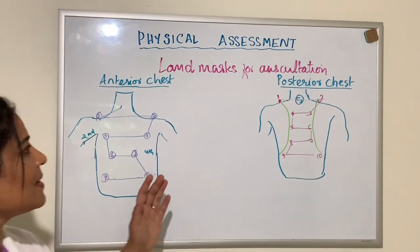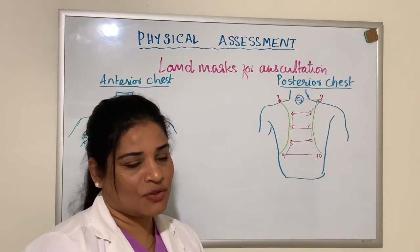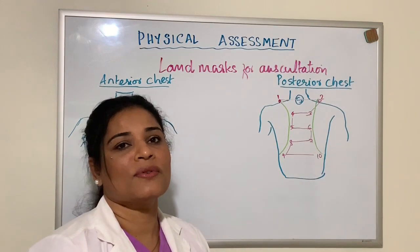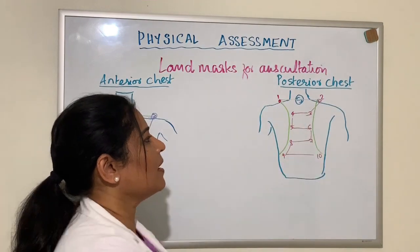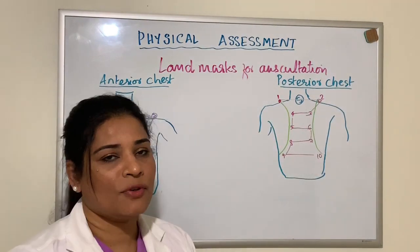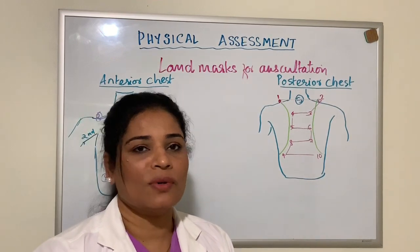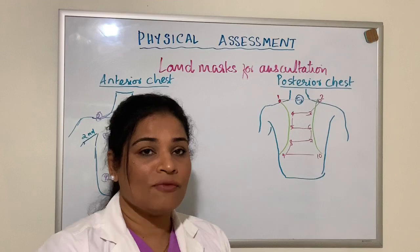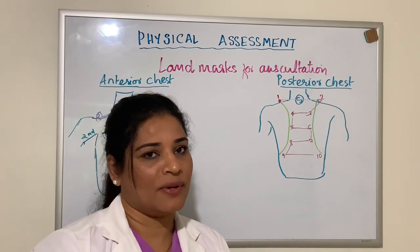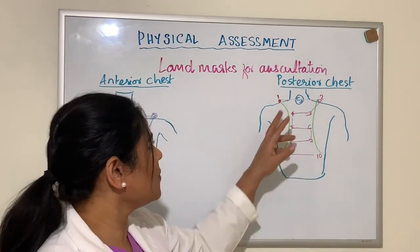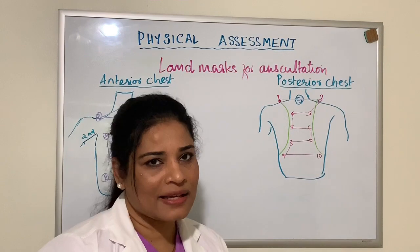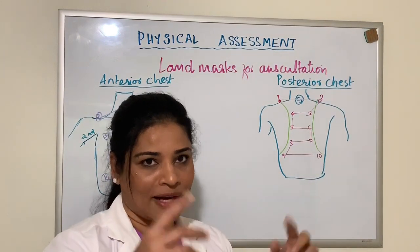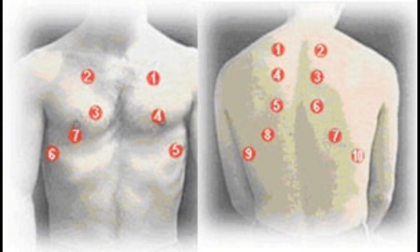In the same way, we assess the posterior chest using specific landmarks. There are bony structures — the scapula and vertebral column — so if you place your stethoscope over the bone you won't hear anything. You have to keep your stethoscope between the vertebral column and the scapula. The landmarks on the posterior side form a shape somewhat like a sports bra pattern. Auscultate the landmarks as shown in the picture — that's all about lung sound auscultation.